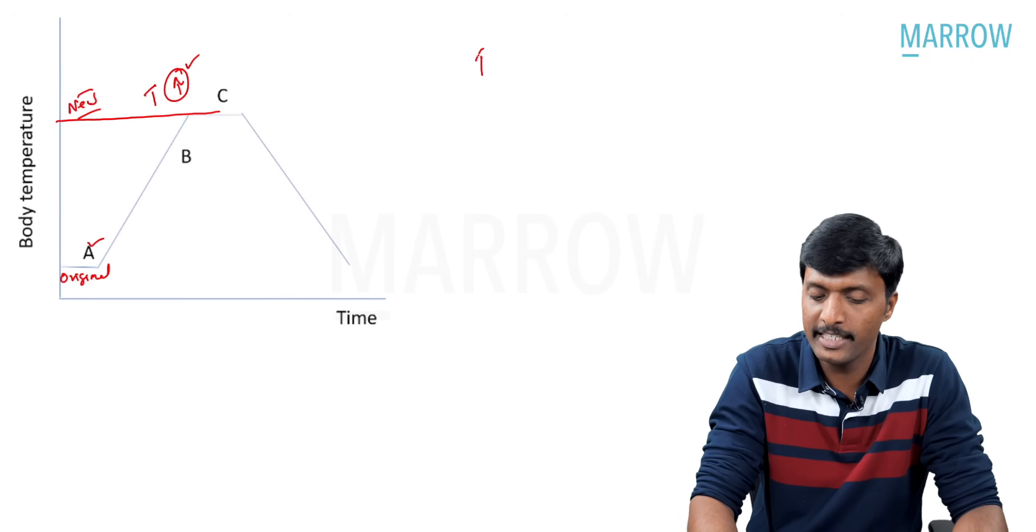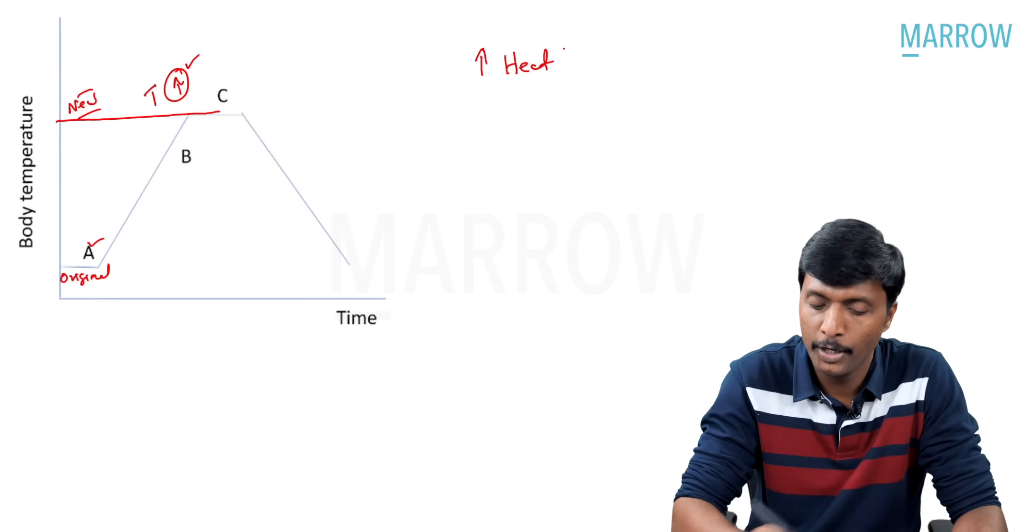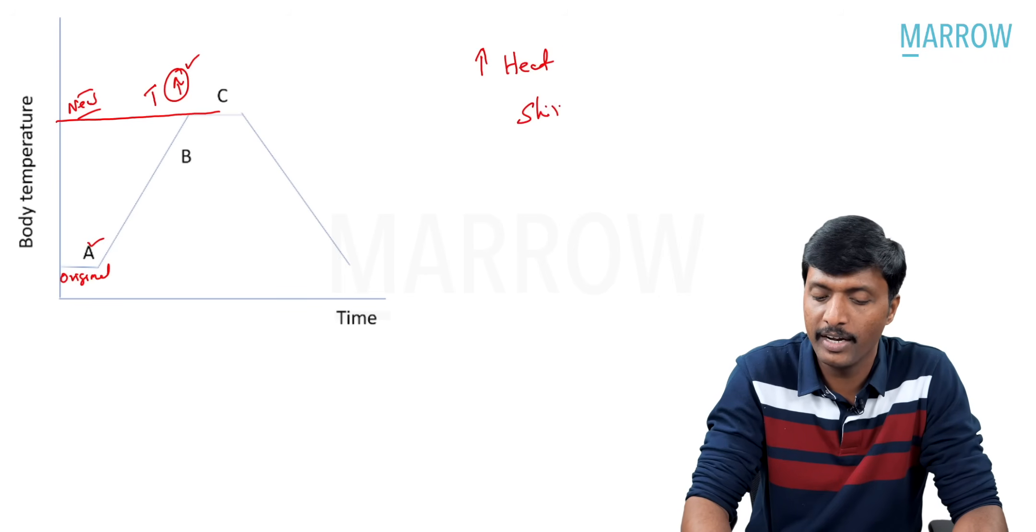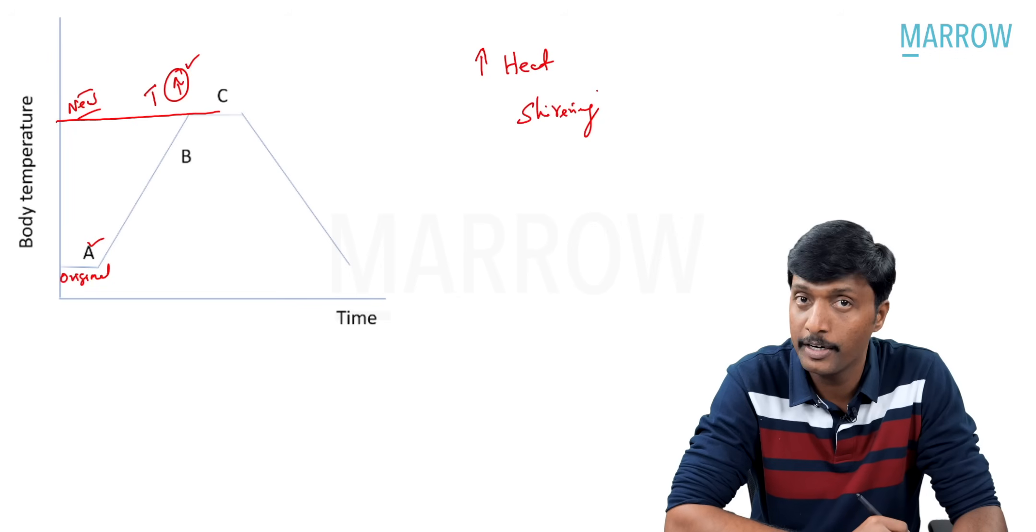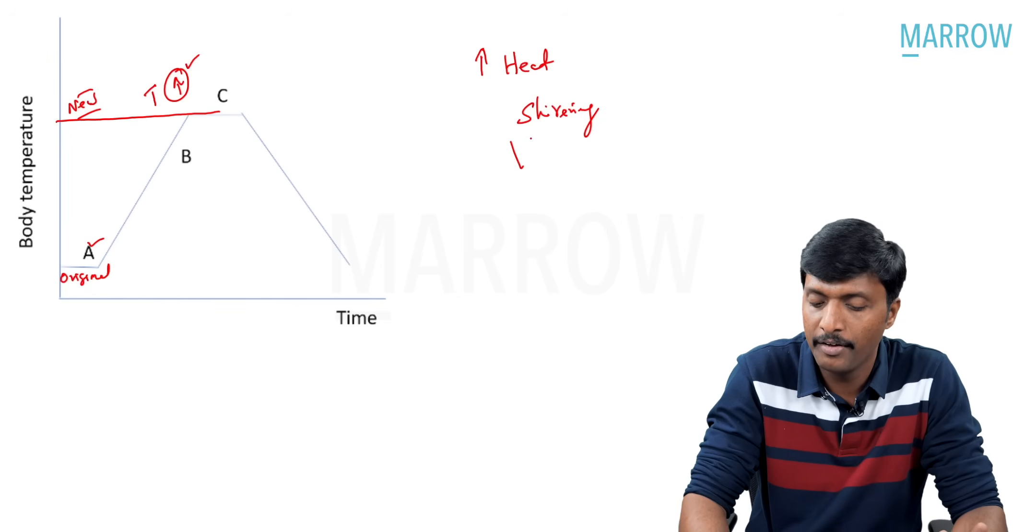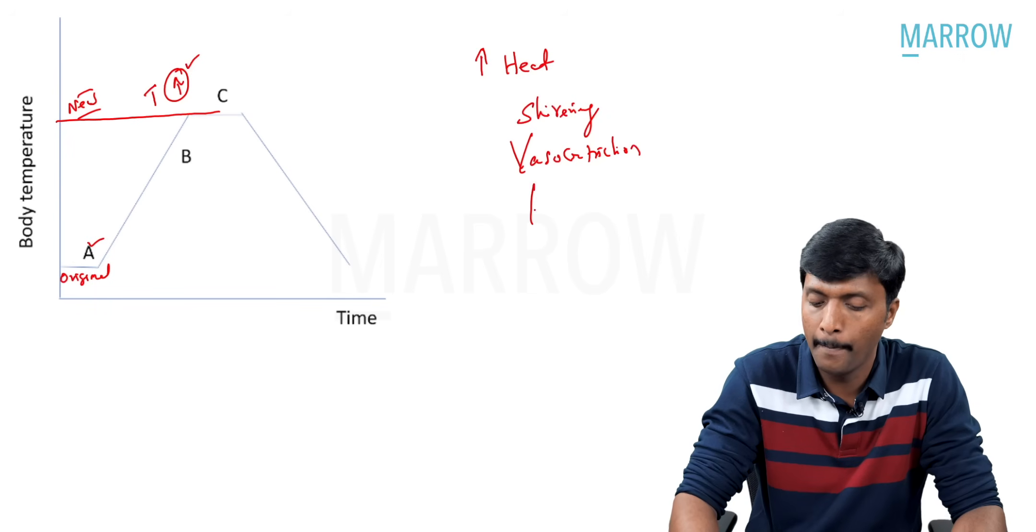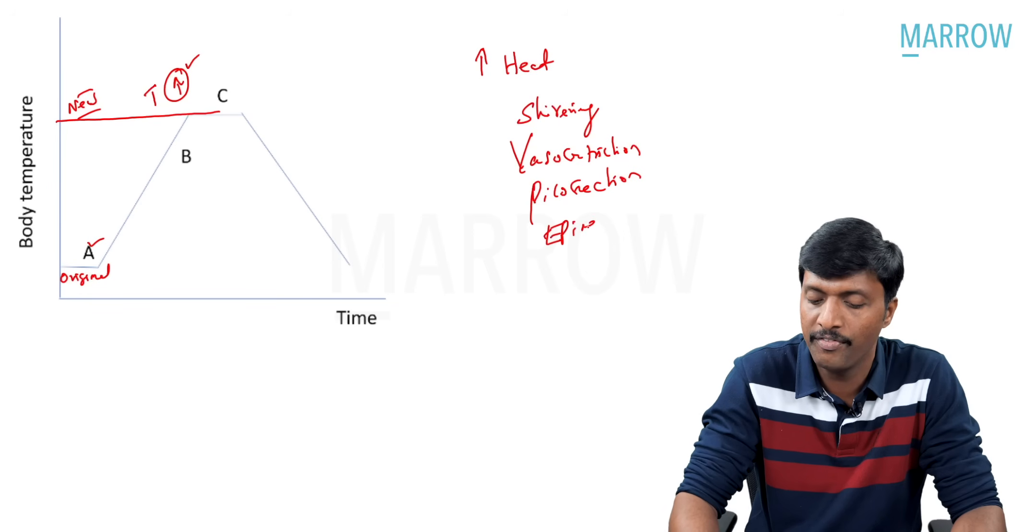So to increase body heat, what is actually needed? You need to do shivering. Very important. Second, vasoconstriction. Third, piloerection. Fourth, epinephrine secretion increases.